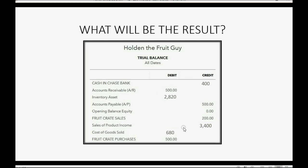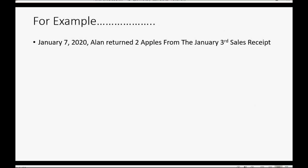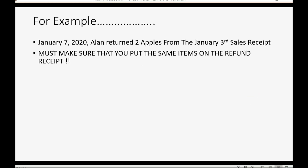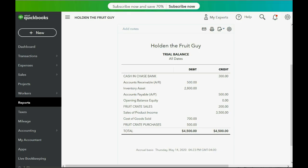So these will be the numbers in the trial balance after we record our refund receipt. And here's the example refund — you must make sure that you put the exact same items on the refund receipt, apples, that you originally put on the original sale receipt. So, January 7th, two apples returned from Allen.